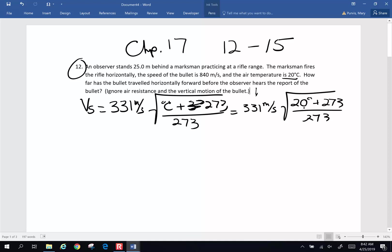Now remember order of operations. You have to add, then divide, then square root, then multiply. Velocity of sound on this day, when you get through all of that, is 343 meters per second.